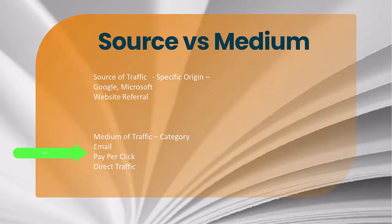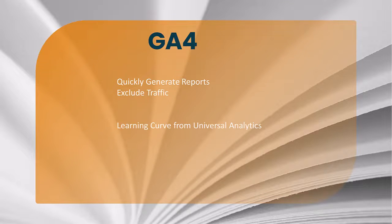With GA4, another benefit is you can quickly generate reports and exclude traffic. There is a bit of a learning curve from Universal Analytics, but once you get in there and use it consistently, your learning curve will definitely go up. Some things you can track with GA4 that you can't in Universal Analytics include specific page views, form fills, outbound clicks, file downloads, and button clicks — and it's a lot easier using Google Tag Manager.